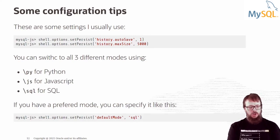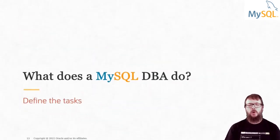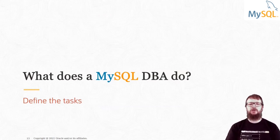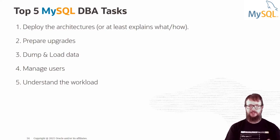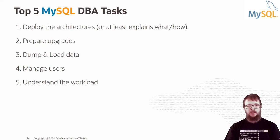Now the presentation is about DBA tasks and the shell — how the shell can help MySQL DBAs. What does a MySQL DBA do? I have chosen five tasks that are the most common for DBAs. The first is to deploy the architecture — or at least explain what and how to deploy the architecture to operators. The second task is to prepare upgrades between versions.